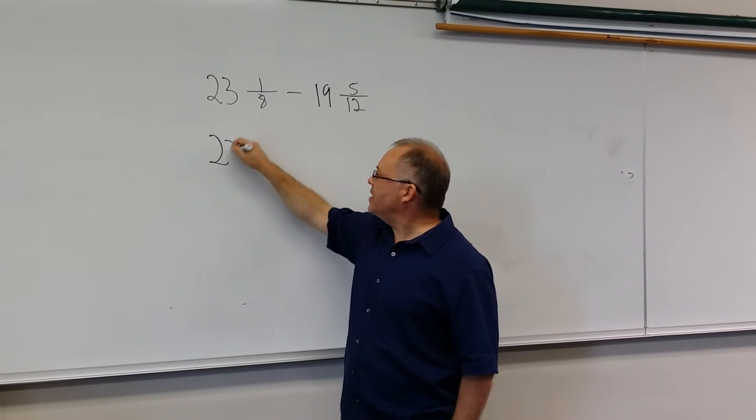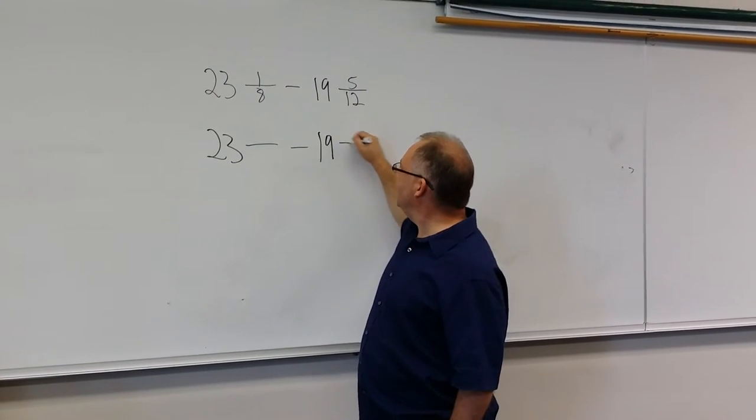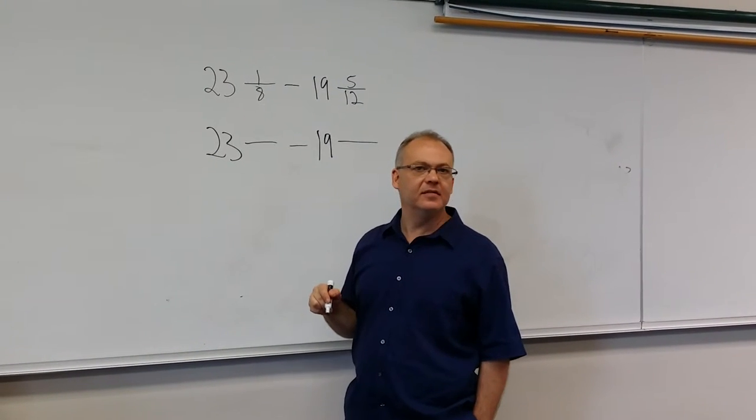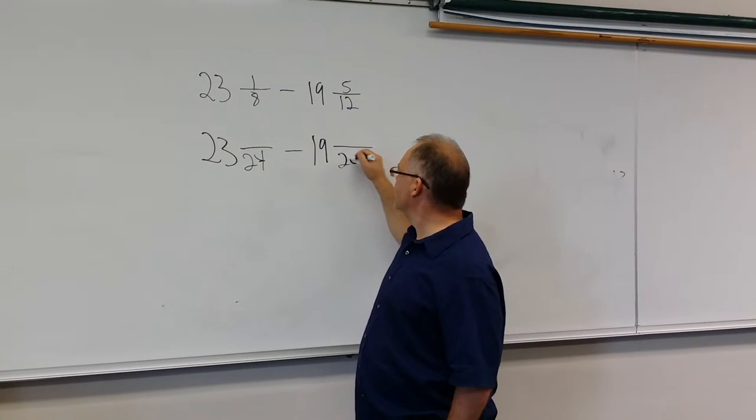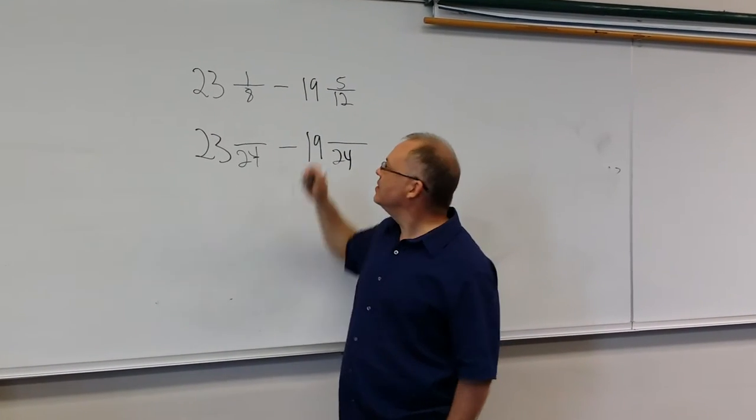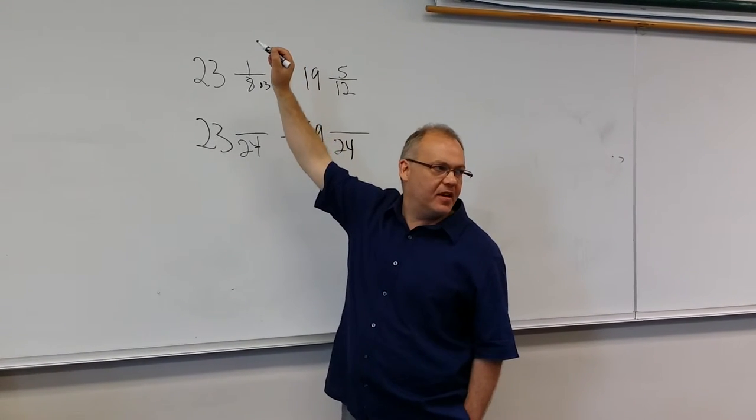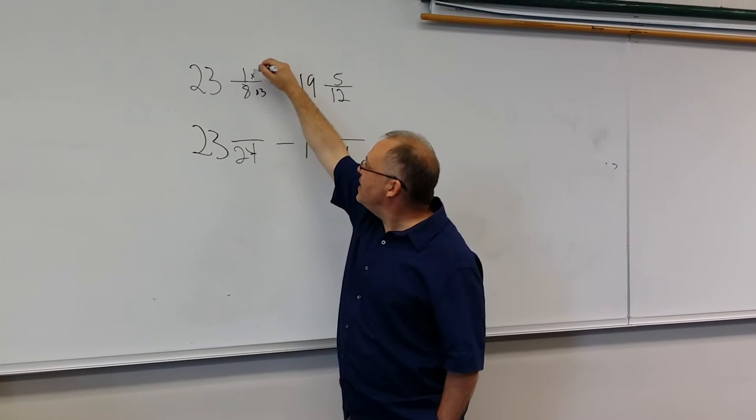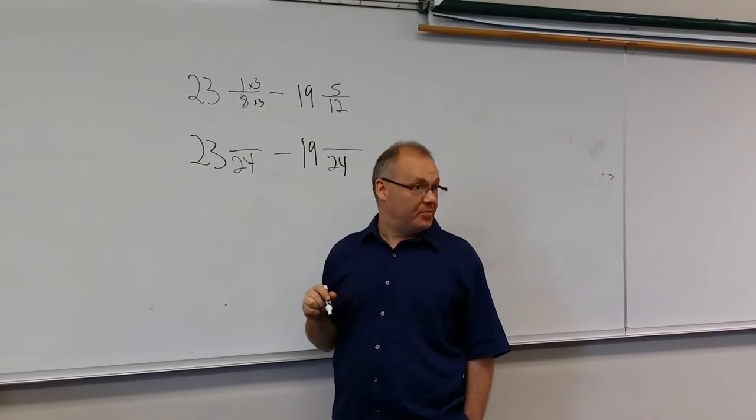So let's set up our common denominator. And again, class, what's the common denominator? 24. And 8 goes into 24 how many times? 3. Times 3. And what we do to the bottom, we do to the top. And 1 times 3 is? 3. Good.